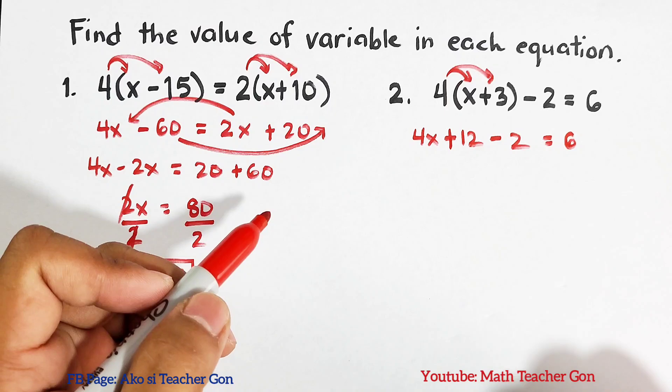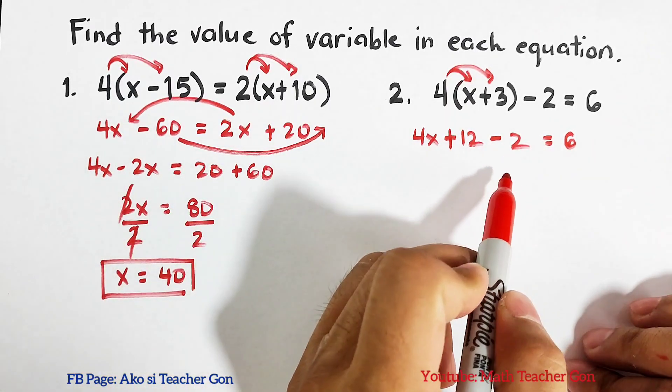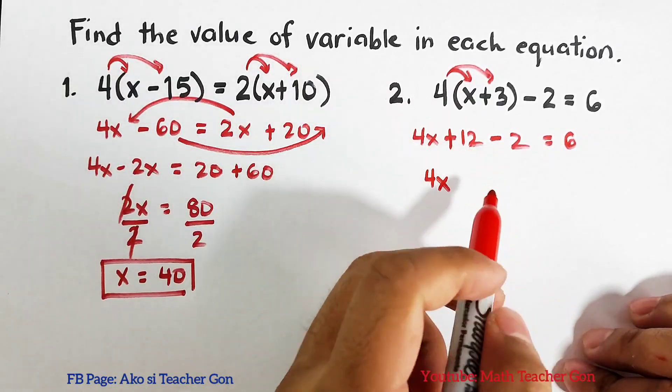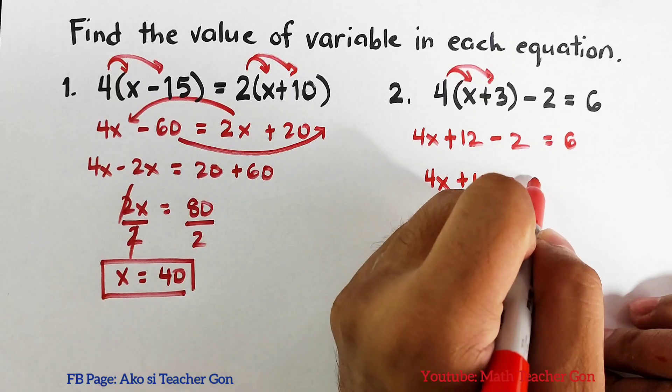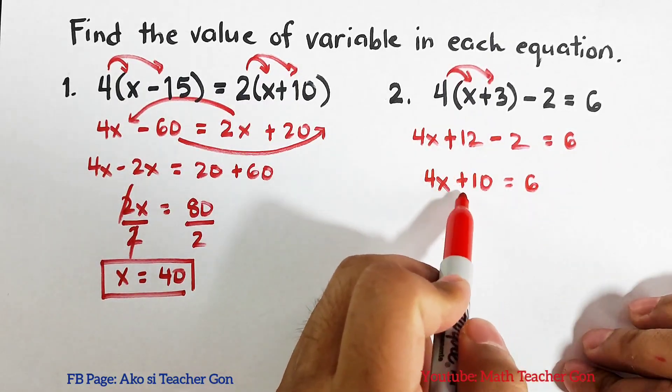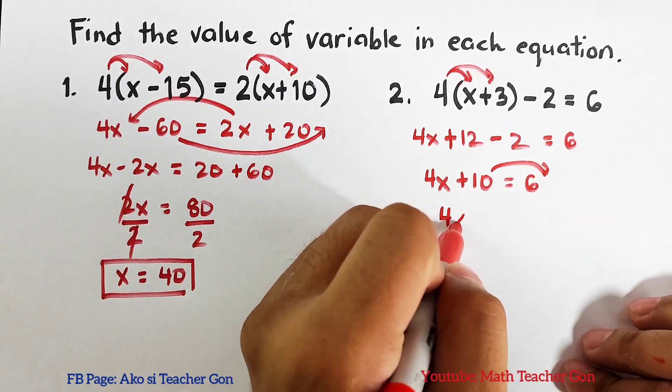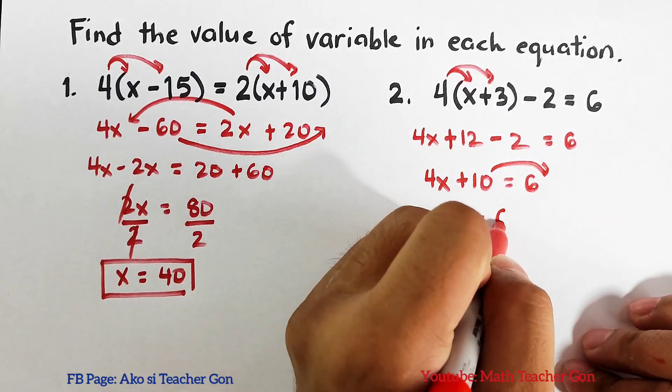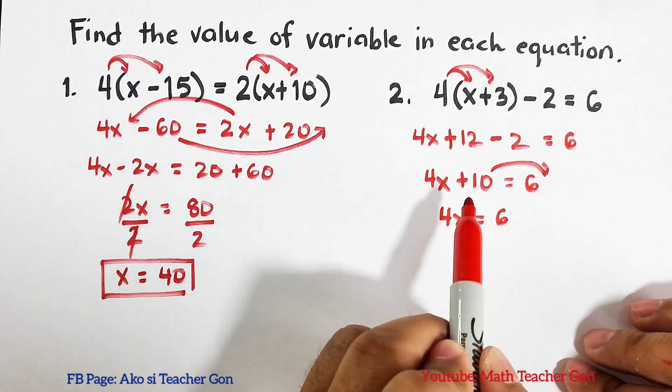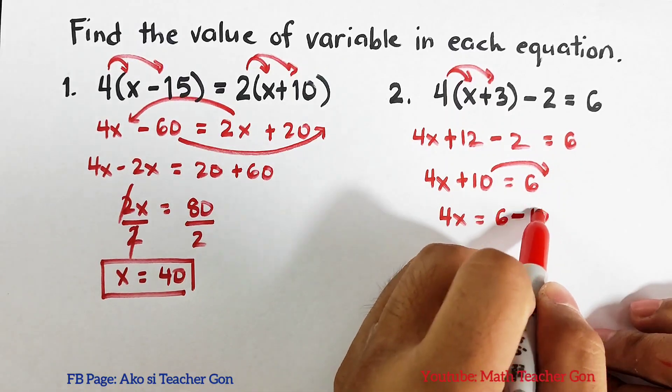Now before I isolate the constants on the other side of the equation, we need to simplify this part: 12 minus 2. So that would be 4x plus 10 is equal to 6. On this part, as you can see, we can put it here. So this will become 4x is equal to 6. From positive, remember when you're transposing a term to the other side of the equation, it will change the sign. It will become minus 10.